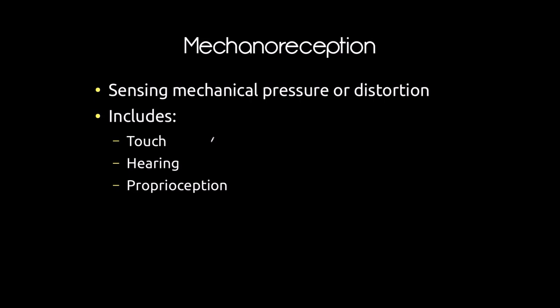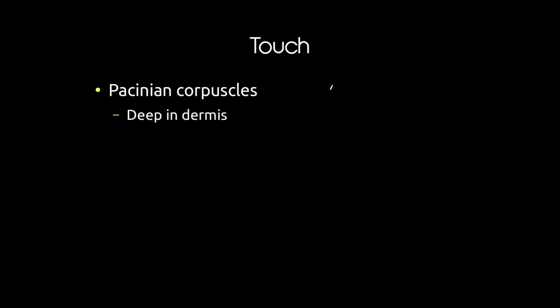Mechanoreception is the sensing of any sort of mechanical pressure or distortion. It covers a lot of different things — including what you'd probably think of as many different senses. This includes the sense of touch, which is a somatic sense distributed all over the body. But it also includes special senses such as hearing — which you might not think of as an extension of touch, but it really is in certain ways. Proprioception also falls under mechanoreception.